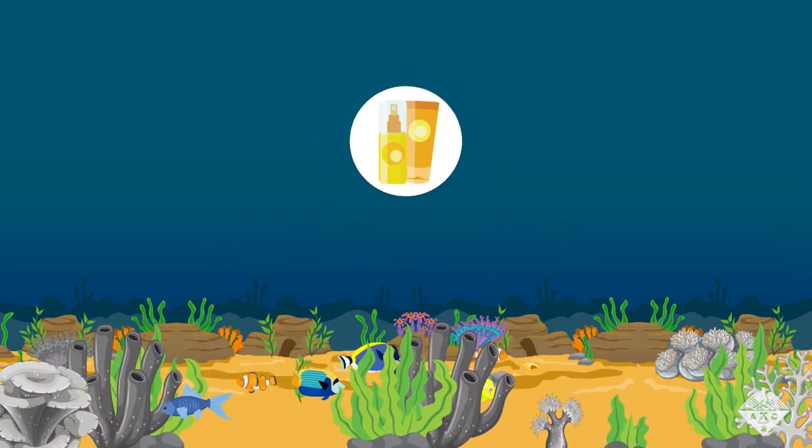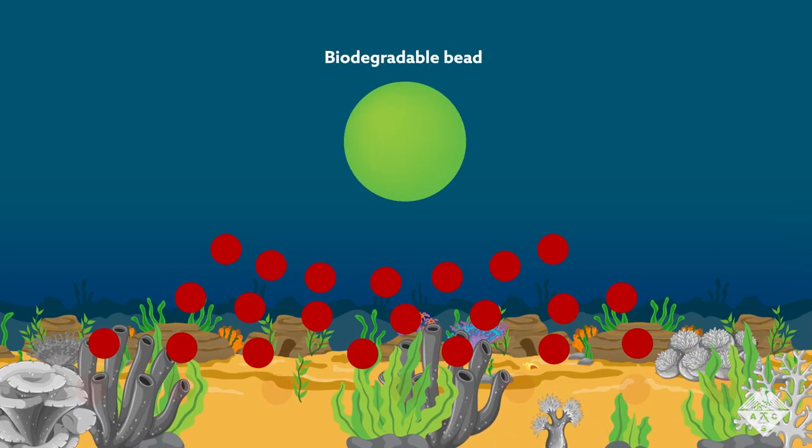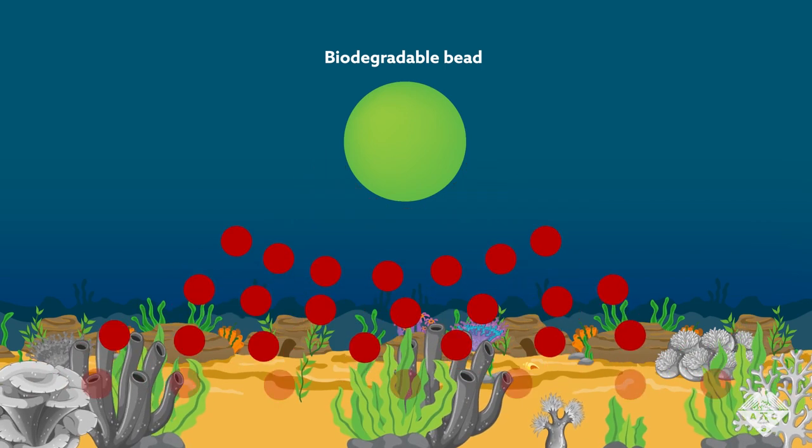Now, researchers have developed a biodegradable bead that can soak up the sunblock ingredient, oxybenzone, like a thirsty sea sponge. They hope to use the agent to clean up seawater at beaches.